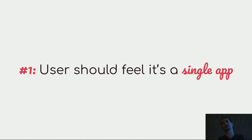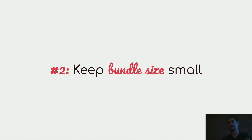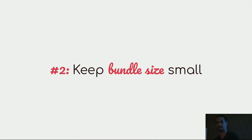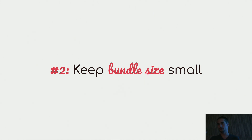On the server side you don't really care if different services look or behave different — you can have one Java server, one Kotlin server, one Node server, and one Go server. The user doesn't care. But when we're talking about UI and look and feel, it should look the same. The next challenge is bundle size. On the server side nobody cares — you can use Java with hundreds of JARs. But on the client side you can't send dozens of copies of React. You need to pay attention to bundle size, and reuse libraries and components where you can.